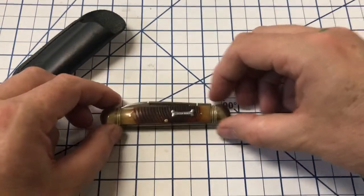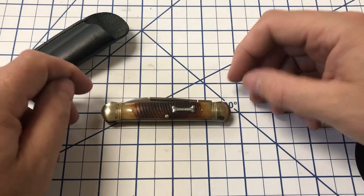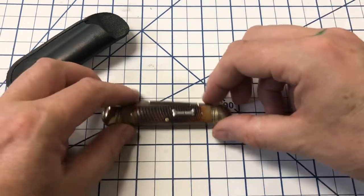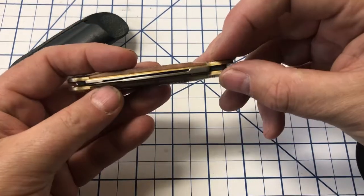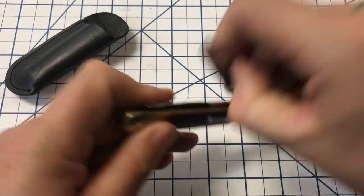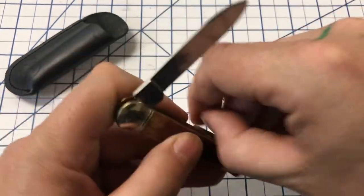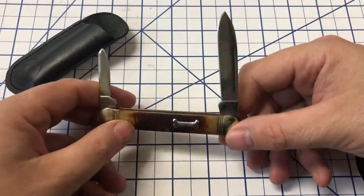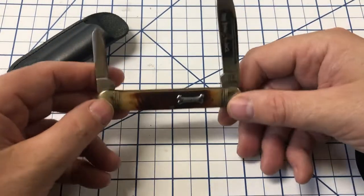Now the one thing that has always bothered me about this knife is that they call it a dog bone jack, but it's not jack knife, it's a pen knife. Jack knife has the blades coming from the same end. This pen knife has blades at each end. But I suppose dog bone pen isn't as cool a name as dog bone jack.